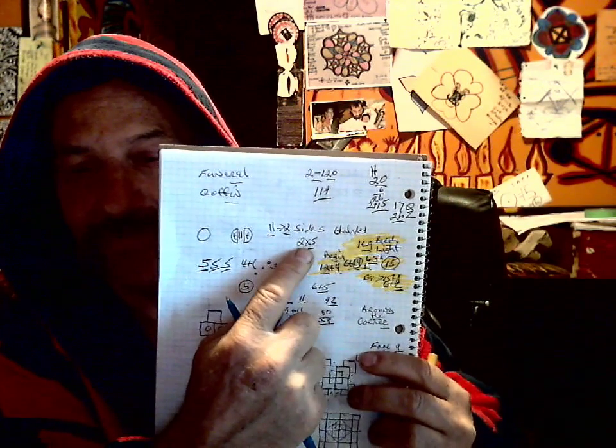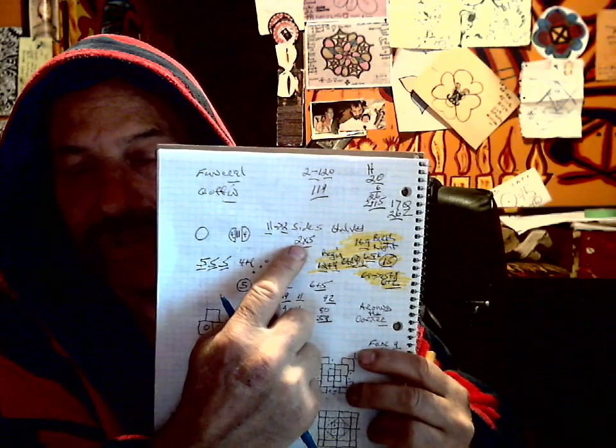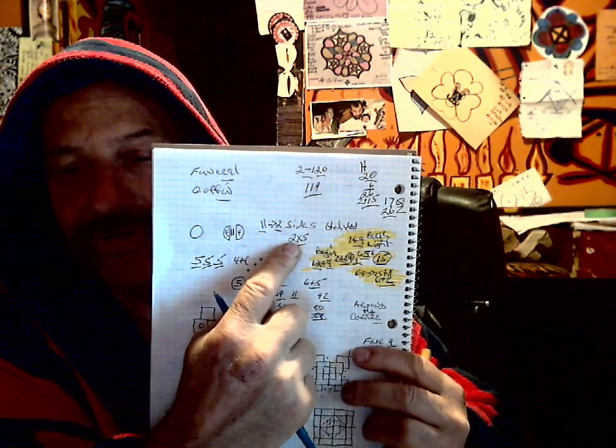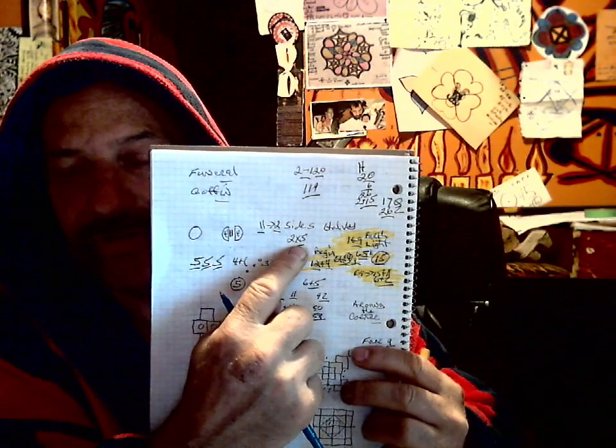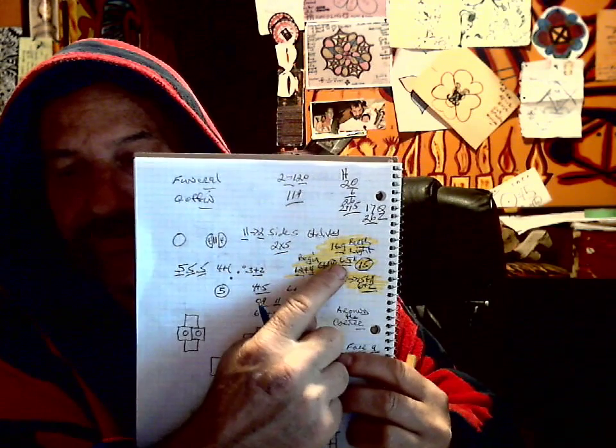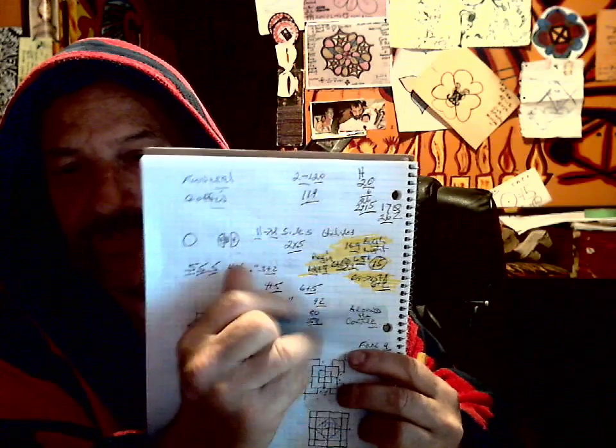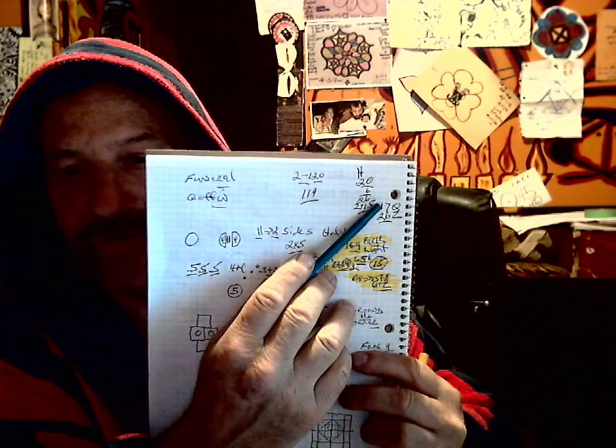Two times five is ten. Five times two is ten. Five plus two is seven. Ten, seven, 17. It equals to the queen, number 17.